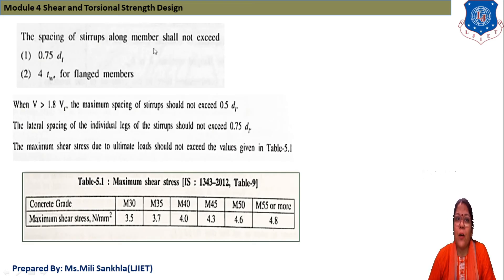Spacing of stirrups along the member shall not exceed 0.75 DT and 4 TW for flange member. When shear force greater than 1.8 VC, the maximum spacing of stirrups should not exceed 0.5 DT and the lateral spacing of individual leg of stirrups should not exceed 0.75 DT. This will be given in our IS-1343 table. Concrete grade according to we have to take our maximum tau max.